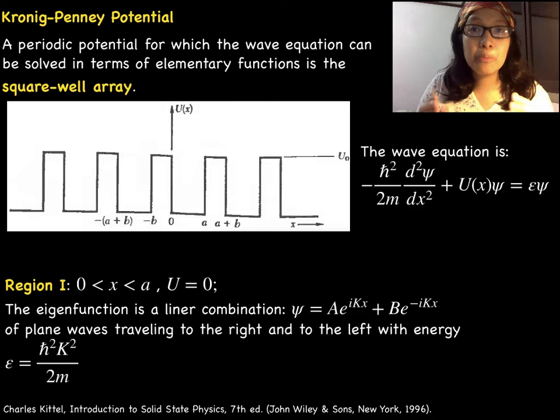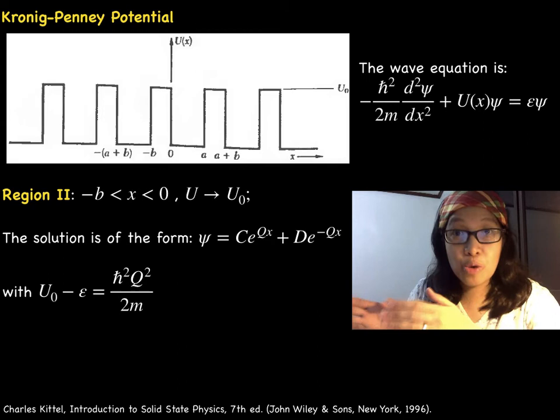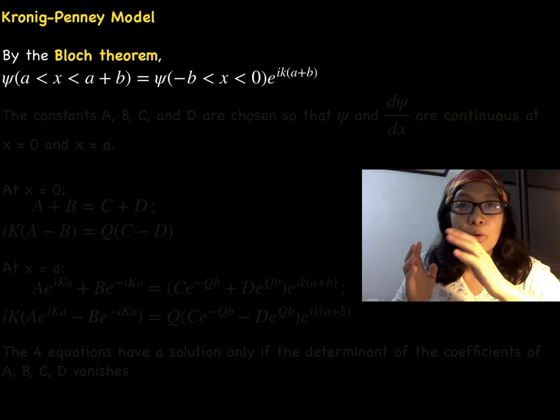Region one has width a and zero potential. The second region has width b and potential equal to U₀. The solution this time has the form as shown with the energy containing the potential U₀.